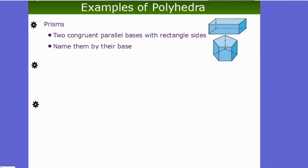Prisms are formed by starting with two congruent polygons — picture them being pulled apart with something sticky connecting each vertex. With rectangles it can be confusing because you can pull apart in different directions. Generally, when the bases aren't rectangles, you look for the faces that aren't rectangles — those are the bases. This example is a pentagonal prism because the bases are pentagons, and the faces on the side are rectangles.